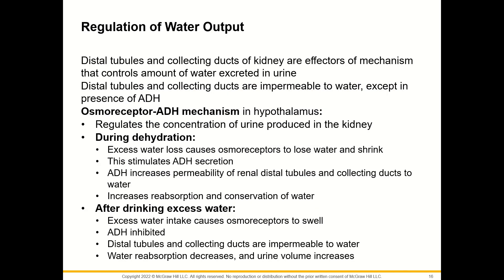Regulation of water output: distal tubules and collecting ducts of the kidney are effectors of mechanisms that control the amount of water excreted in urine. These tubules are impermeable to water except in the presence of antidiuretic hormone (ADH). During dehydration, excess water loss causes osmoreceptors to shrink, stimulating ADH secretion. ADH increases the permeability of renal distal tubules and collecting ducts to water, increasing reabsorption. After drinking excess water, osmoreceptors swell, ADH is inhibited, and urine volume increases.